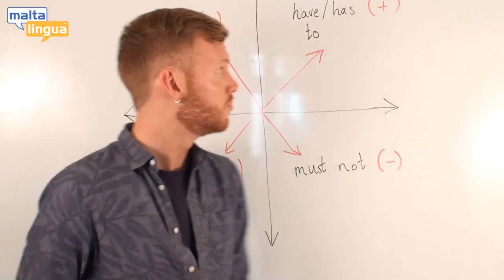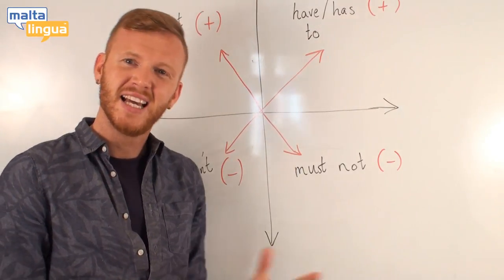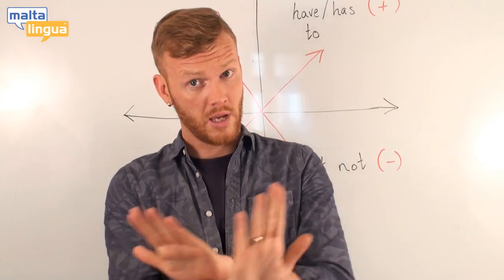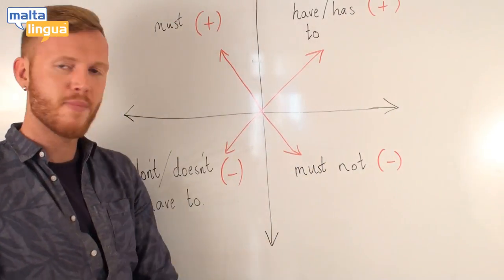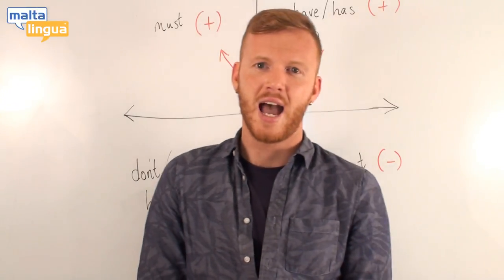So, if it is necessary, we use must or have or has to. If it is not necessary, or if it is against the rules, we use must not or don't or doesn't have to.